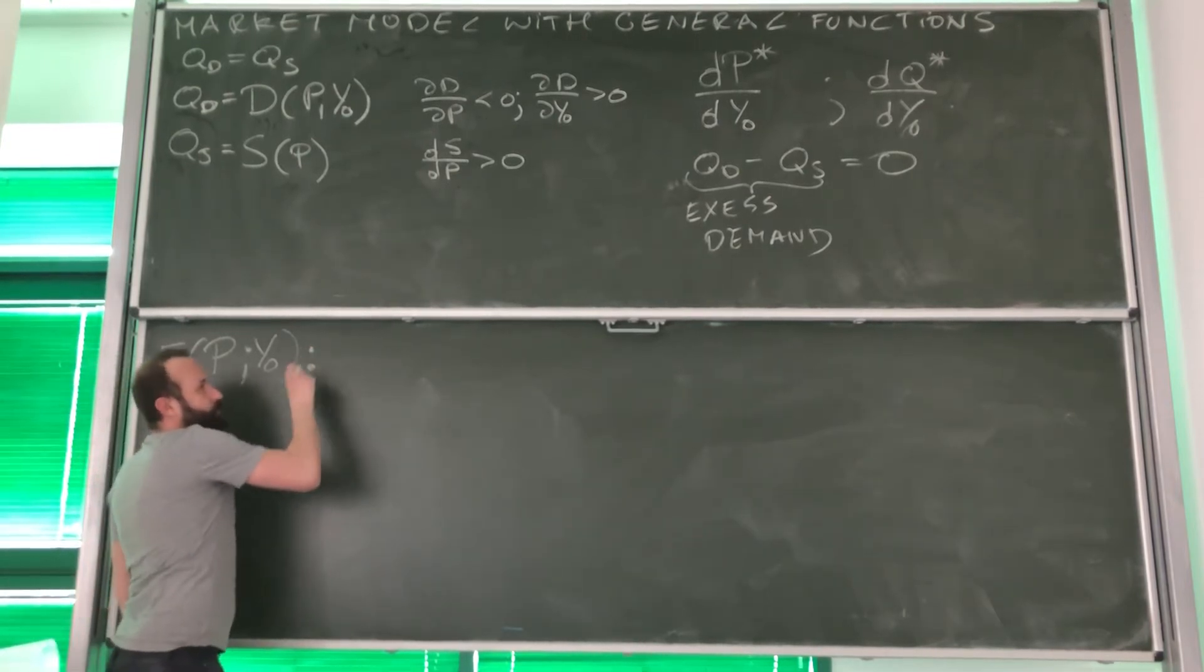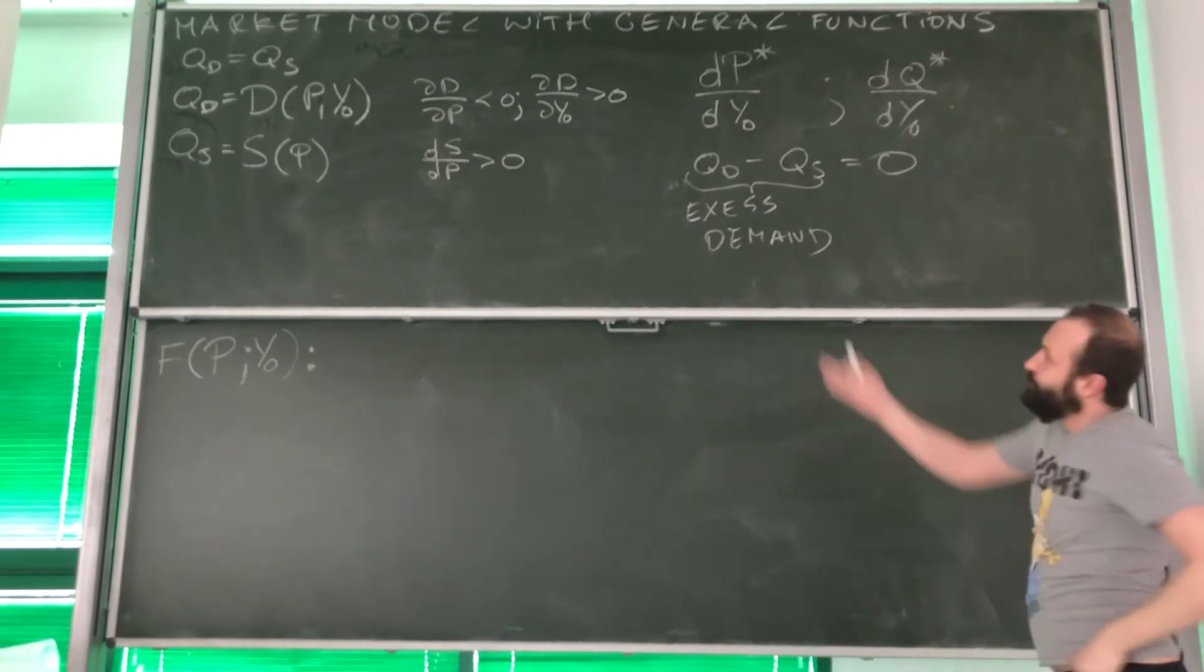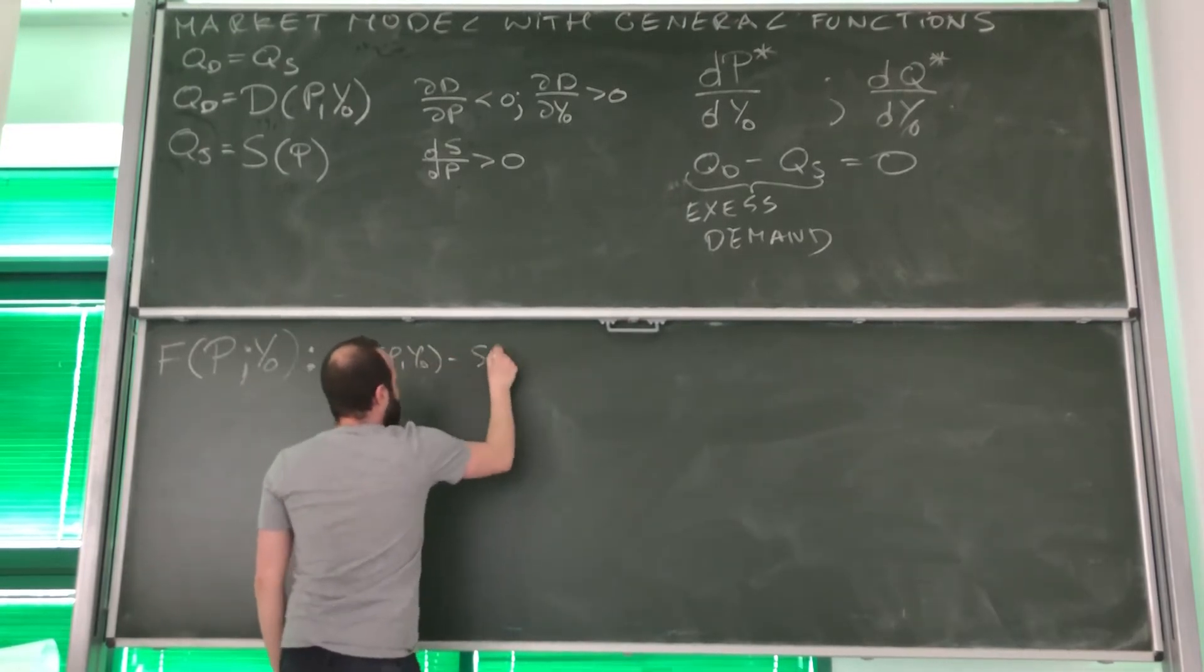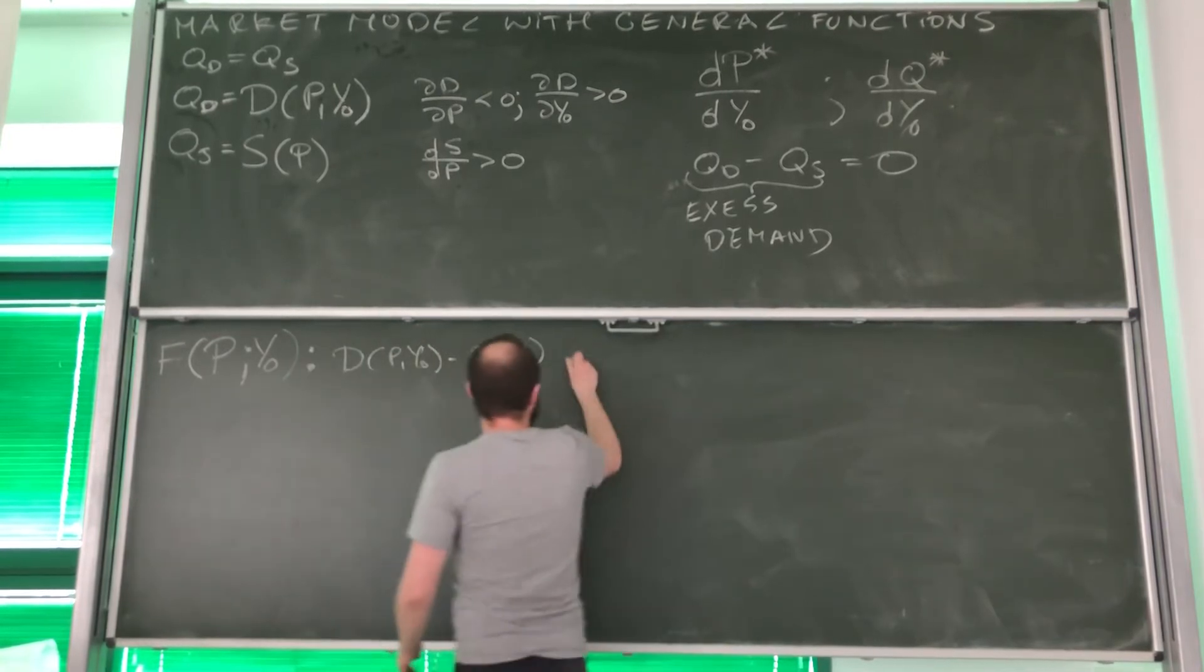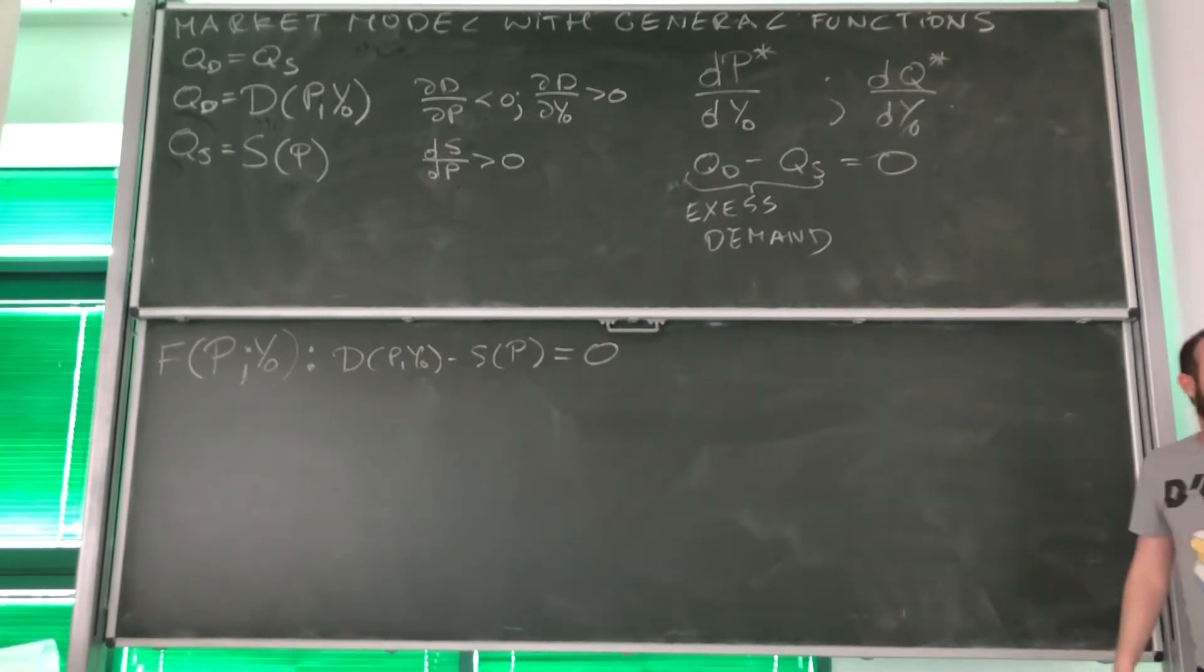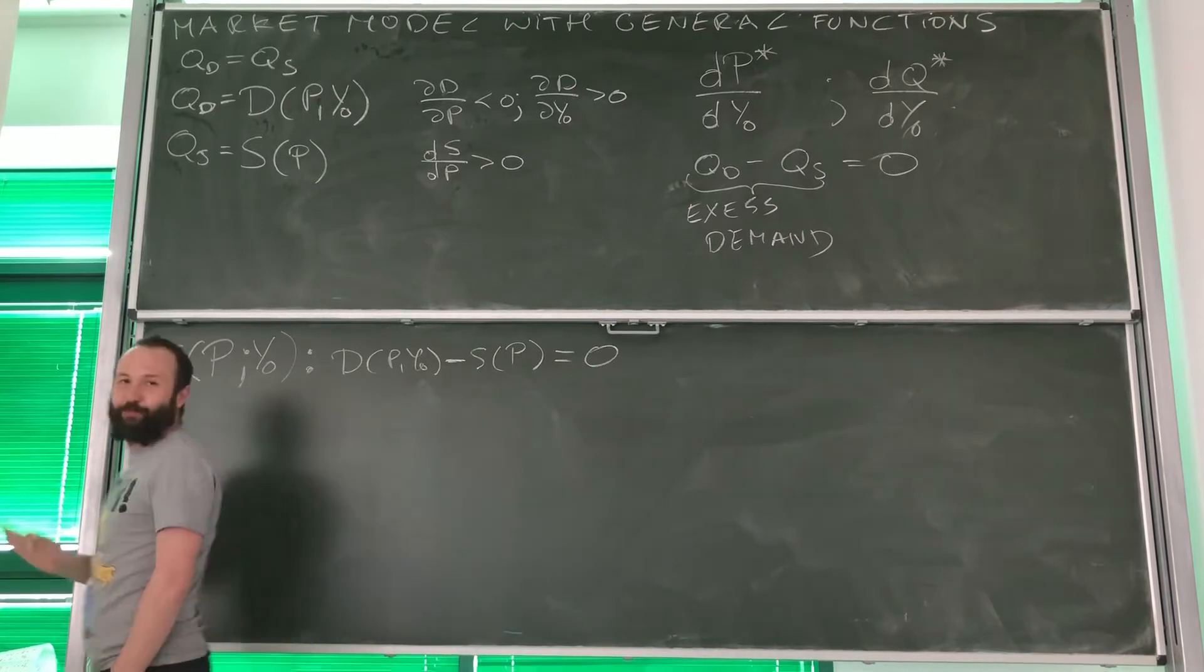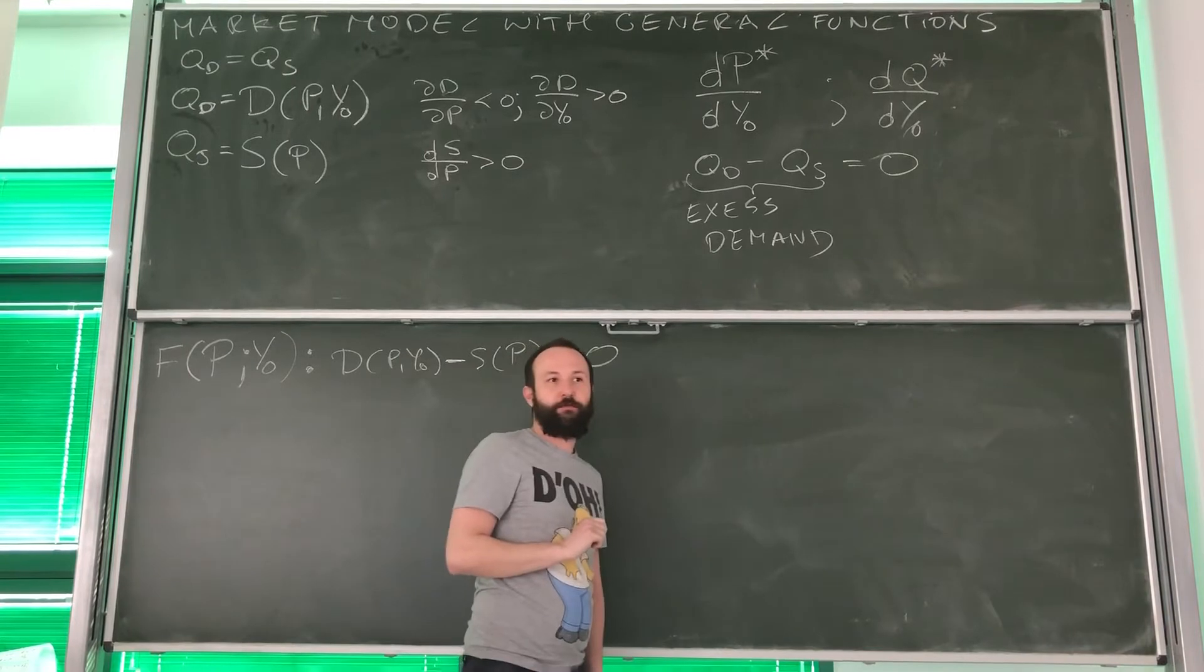Now, how does this function look? Well, in our case, we can use excess demand and simply substitute the two functions that you see over here. So we've got that this is D(P,Y0) minus S(P). And of course, we know that this is equal to 0. Now, before we can use implicit function rule, there is one more thing we need to do before.